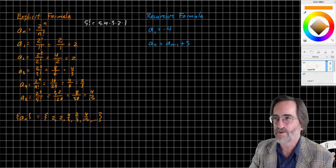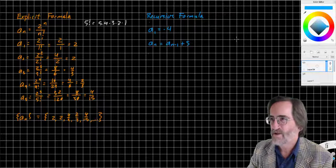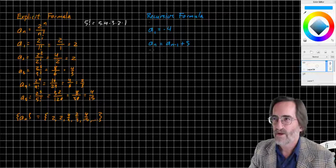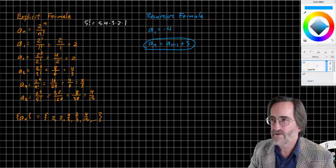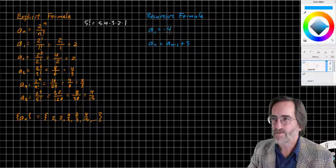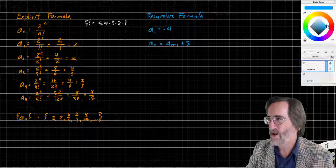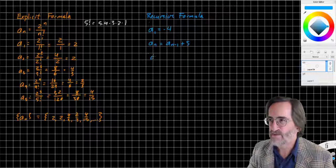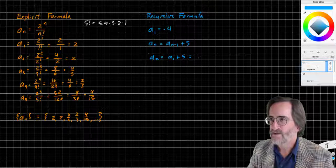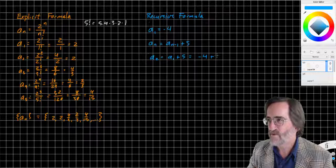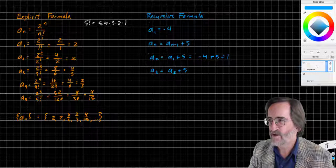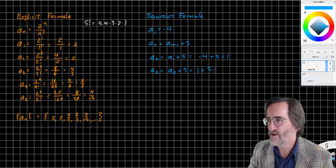Recursive formula is a little different. You'll notice we start by giving a formula for the first term, or we just give the first term. The first term is negative 4. Every other term is defined by the previous term. So the Nth term is defined by the N minus 1th term plus 5. So basically, it just means we're going to start at negative 4, and we're going to add 5. So A sub 2 is A sub 1 plus 5, where A sub 1 is negative 4 plus 5, which is 1. A sub 3 is A sub 2 plus 5. A sub 2 is 1. 1 plus 5 is 6.